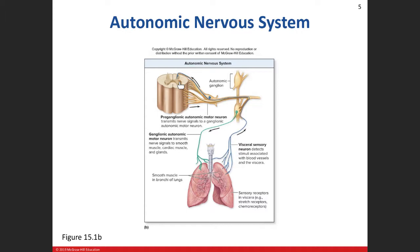With the somatic nervous system, there was just one motor neuron from the spinal cord to the effector organ. With the autonomic nervous system, we deal with two. The first one — the cell body is in the spinal cord — exits and goes into, for example, the sympathetic chain ganglion outside the spine. Depending on which division, that determines where the ganglion is. For parasympathetic, the ganglion is close to the effector organ; for sympathetic, it's close to the spinal cord.